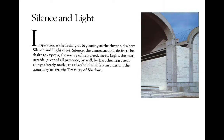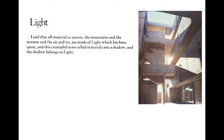Kahn stopped and just said, order is. How do you describe something you can't describe? Poetic metaphor. Kahn's metaphor is silence and light. Silence is a realm of potential where things reside before they have any form. Light is their coming into manifestation and realization. Then he says: this crumpled mass called material casts a shadow, and the shadow belongs to light. So the whole material is light which has been spent.